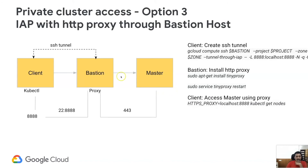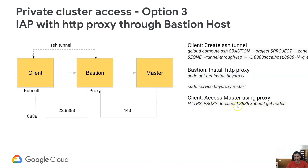The third option, which I would suggest from a best practices perspective, is rather than tunneling the request directly through the bastion, we set up a proxy in the bastion and access the bastion using an HTTP proxy. We do SSH to the bastion with local forwarding terminating at the bastion itself, which then forwards using the proxy installed there. I've used something called Tiny Proxy, and you can use any proxy you prefer. The last step is accessing your master using the HTTP proxy.